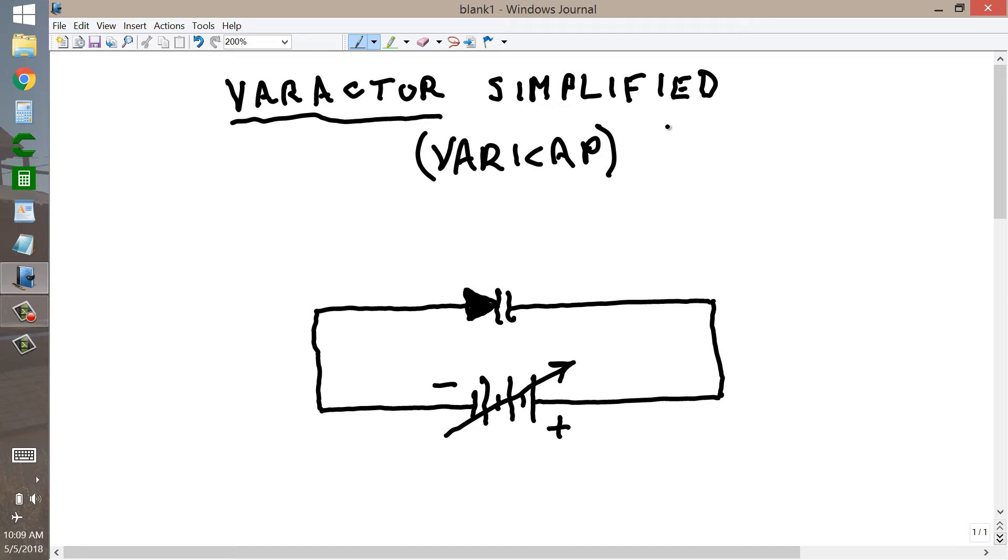As you probably already know, any diode that is reverse biased, that means that the cathode, which is the pair of vertical lines in this case, a diode just has one vertical line, an ordinary diode, a varactor has two, just to differentiate it.